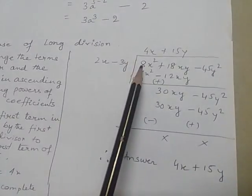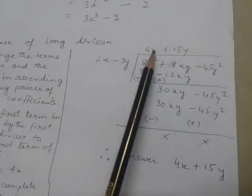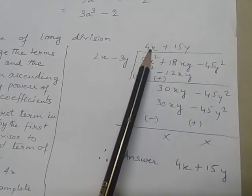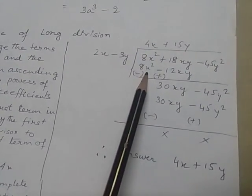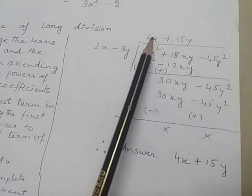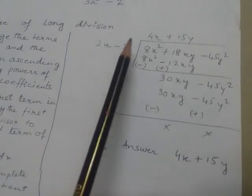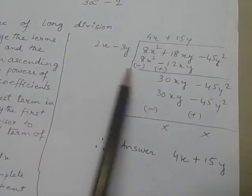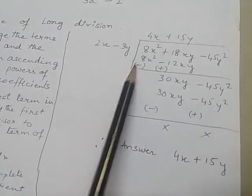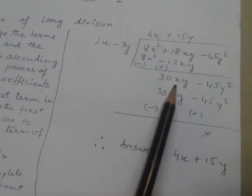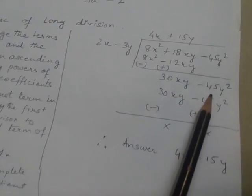2x times what equals 8x²? 4x. So 4x is my first quotient term. Multiply: 4x times 2x equals 8x², and 4x times -3y equals -12xy. I subtract—8x² cancels. This gives 30xy - 45y².